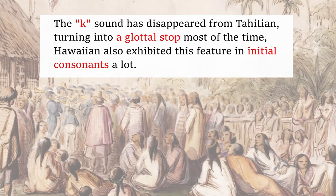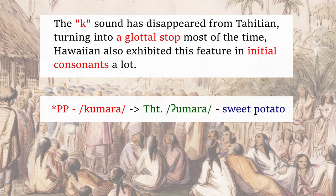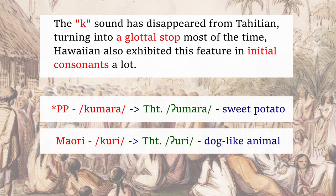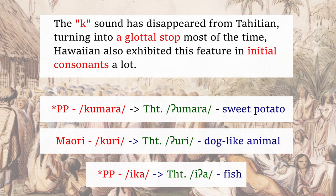Notes about sound changes from Proto-Polynesian. The K sound has disappeared from Tahitian, turning into a glottal stop most of the time. Hawaiian also exhibited this feature in initial consonants. 'Umara, sweet potato. Uri, dog-like animal. Ia, fish.